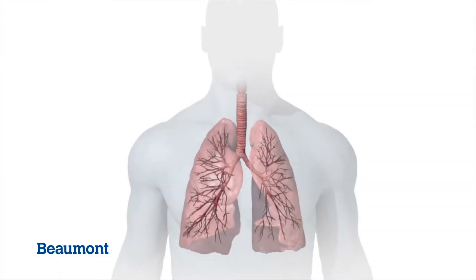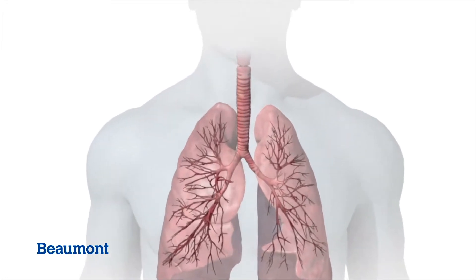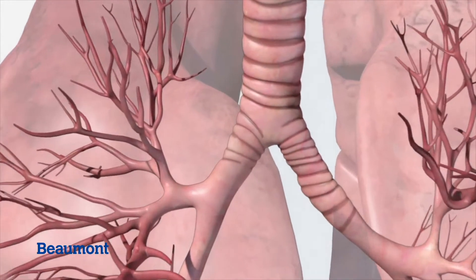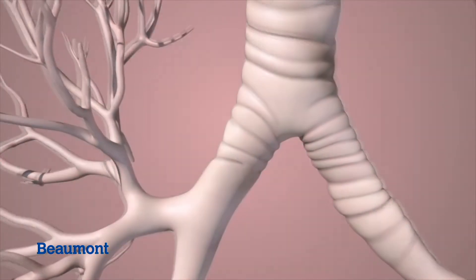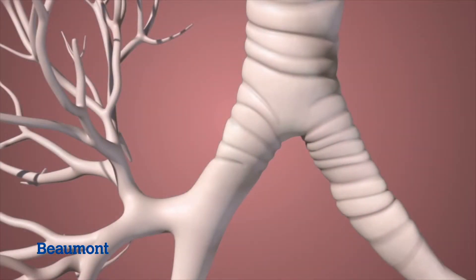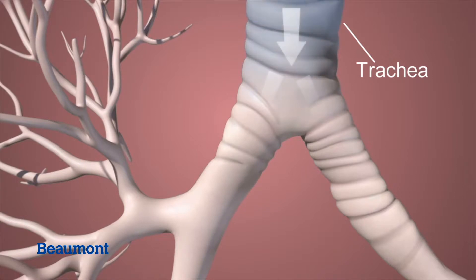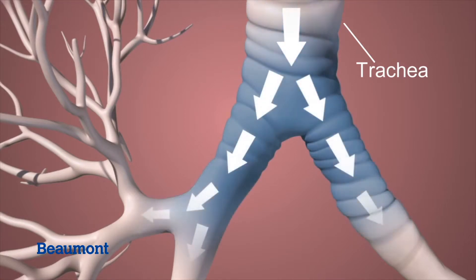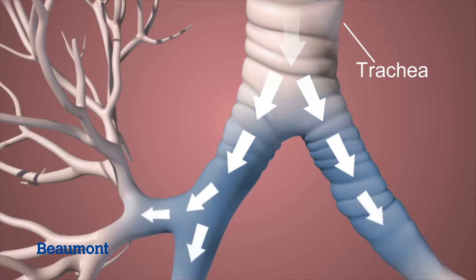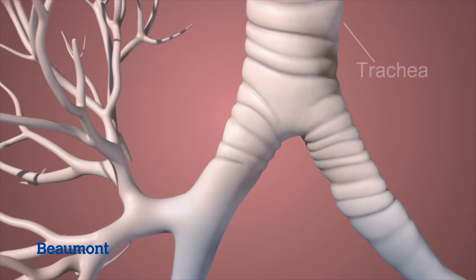The lung is made up of a series of branching tubes that transport air to the end air sacs where oxygen and carbon dioxide are exchanged between the air and the blood. The main breathing tube is called the trachea. The trachea branches into two smaller tubes that branch again to supply air to the lobes of the left and the right lung.